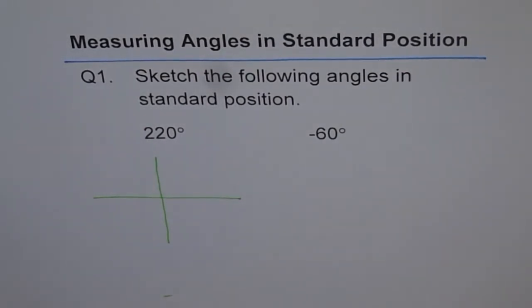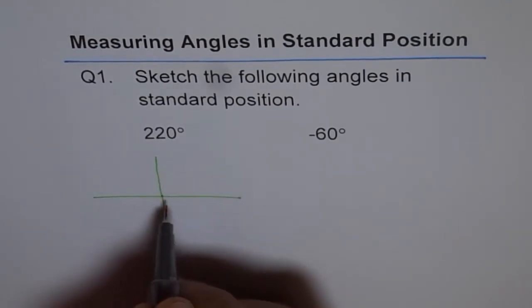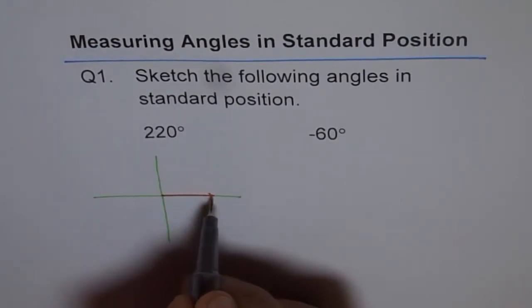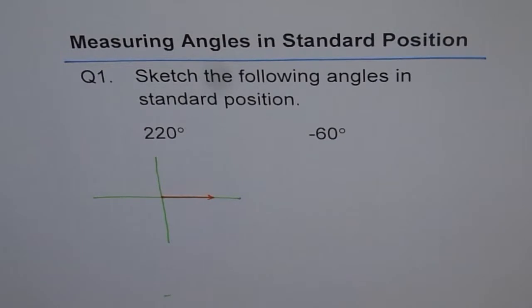Any angle in standard position should have vertex at origin and initial arm along positive x-axis. So that becomes our vertex, and this is the initial arm. 220 degrees.